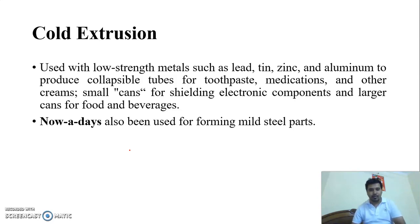Therefore the design of die is not a problem in Cold Extrusion. It is used with low strength metals, that means ductile material, that is lead, tin, zinc, aluminum, and other ductile materials to produce the collapsible tubes for toothpaste, medication and other things. For example, canes for cold drinks. Nowadays, it's also been used for forming the mild steel parts. We know that mild steel also has some ductile properties, so we can use Cold Extrusion for mild steel also.